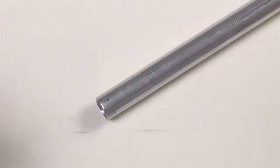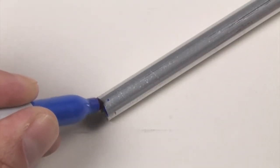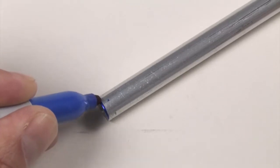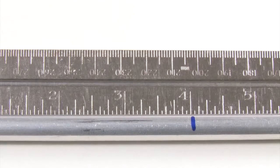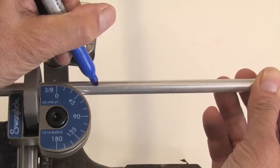To form the layout, mark the end of the tube where the measurements will start. Place a mark 4 inches from the end of the tube, marking the tube all around.